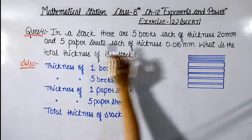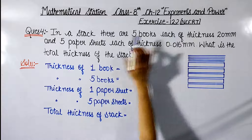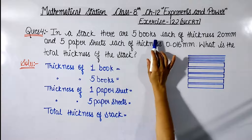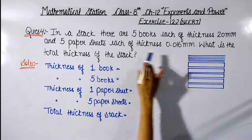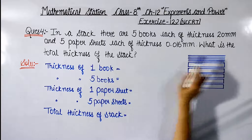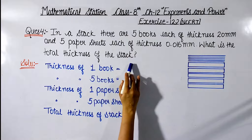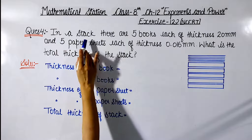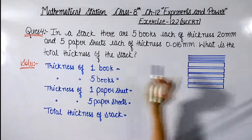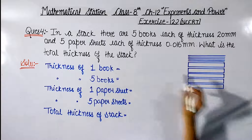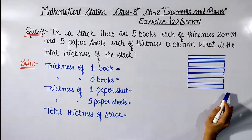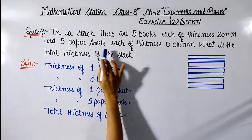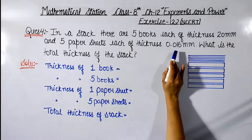Now next is question number 4 from exercise 12.2. The question is: in a stack — a bundle — there are 5 books each of thickness 20 mm and 5 paper sheets each of thickness 0.016 mm.